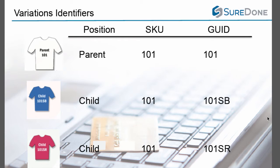While thinking about what variation listings are, it is also important to think about how they are identified. All products have two identifiers: a stock keeping unit or SKU, and a globally unique identifier otherwise known as the GUID. As you can see from the chart, all the items grouped together in a variation listing share an SKU — in this case 101 — but they have different GUIDs. You can quickly identify the parent listing as the only item in a group for which the GUID and the SKU are identical.